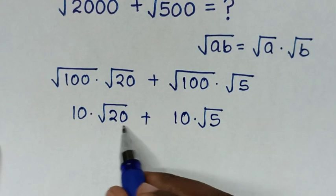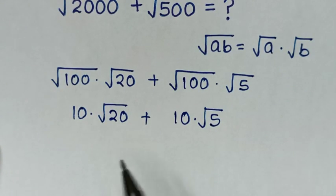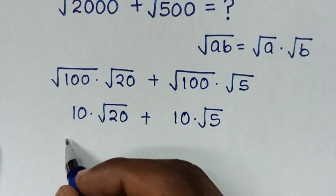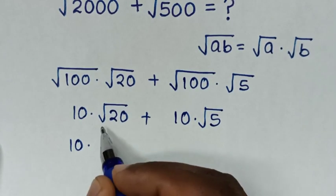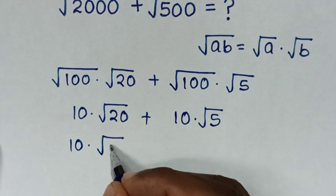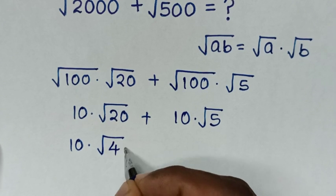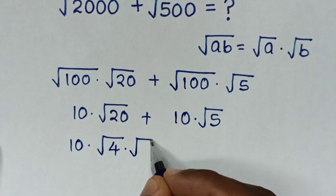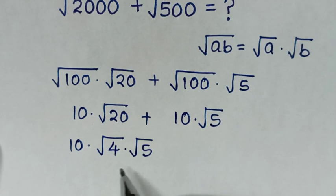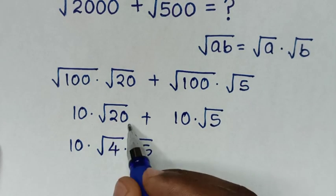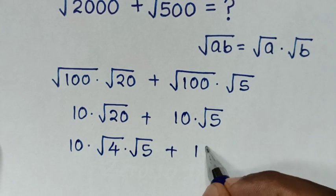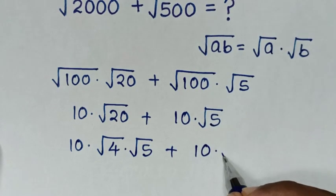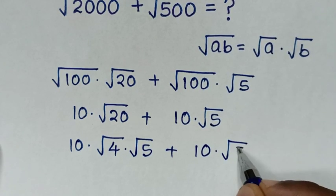From square root of 20, we'll apply the same rule. So it will be 10, times square root of 20 which is the same as square root of 4 times square root of 5, because 4 times 5 is 20. Then, plus this 10 times square root of 5.